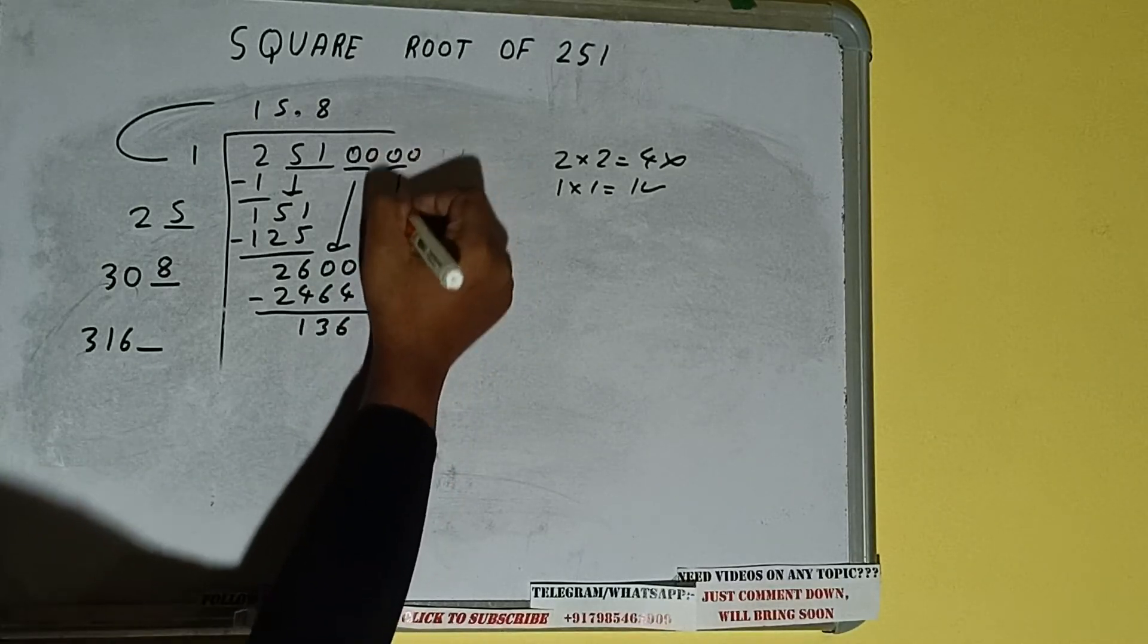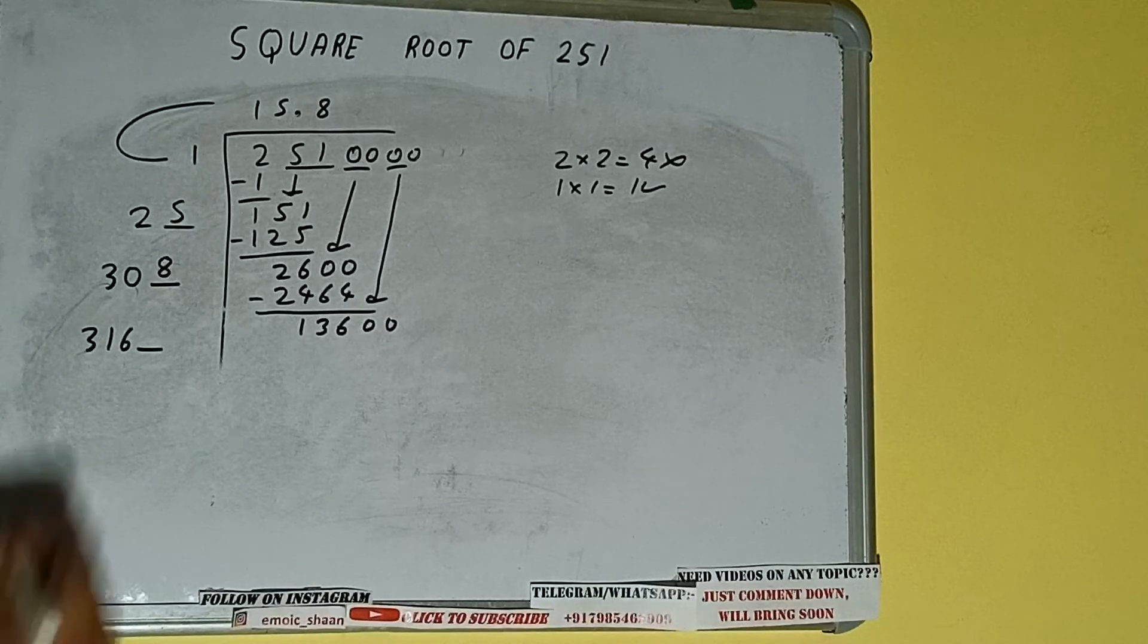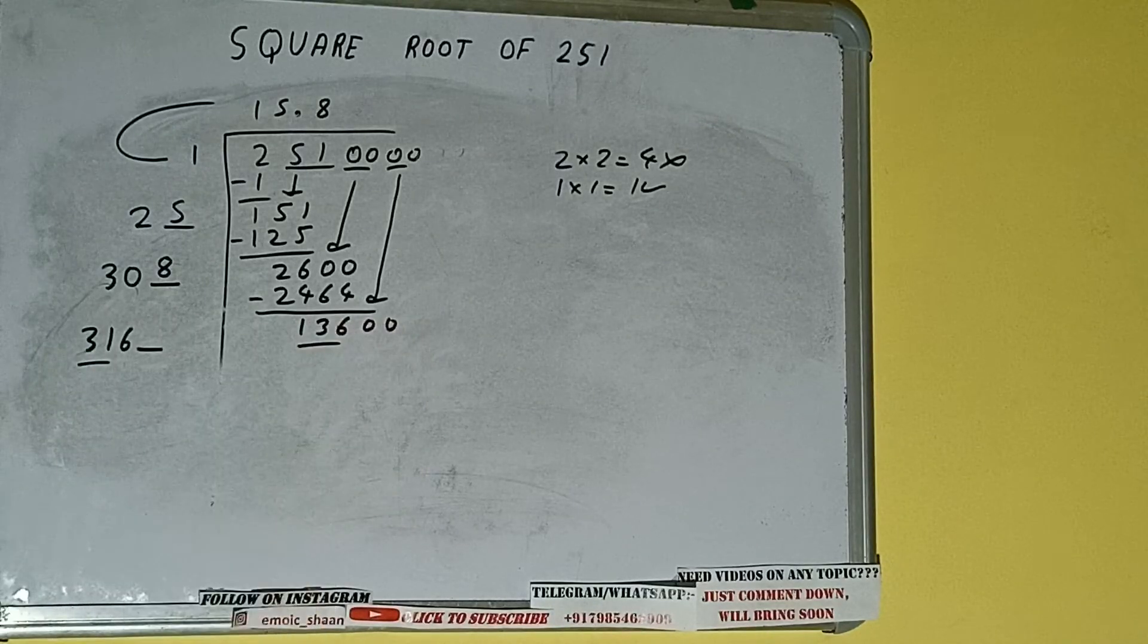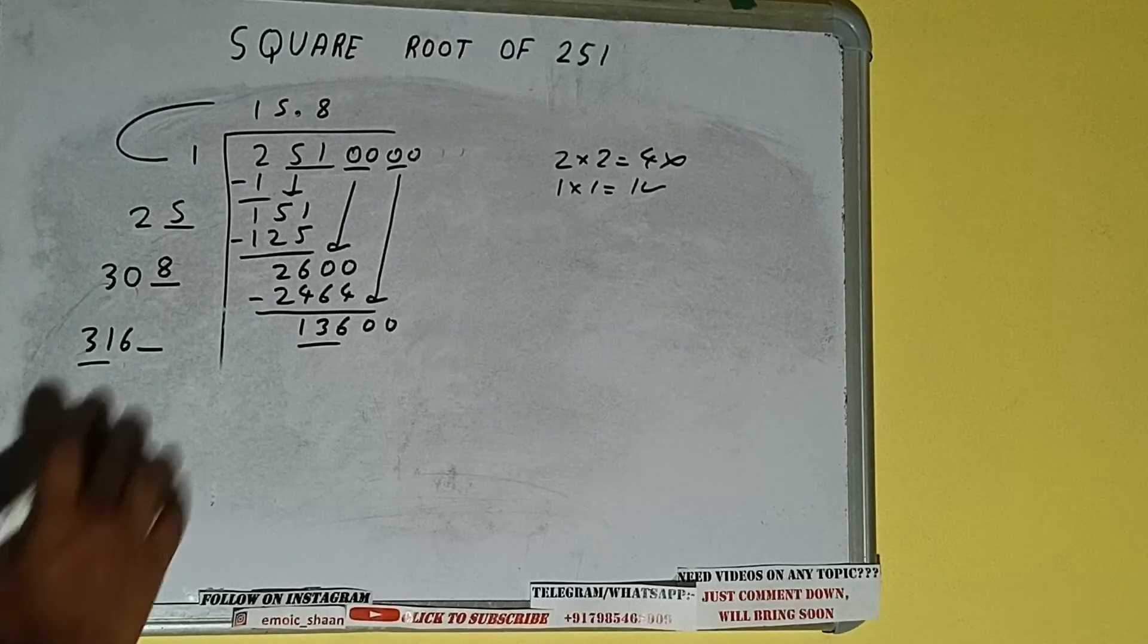So bring the next pair of zeros down and number will be 13600. Now compare this 31 with this 136. So 31 four times is 124.